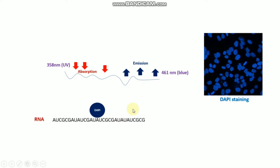DAPI also binds to RNA, though it is not as strongly fluorescent; its emission shifts to around 500 nanometers when bound to RNA.